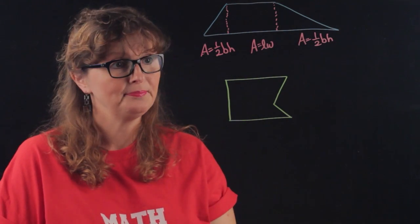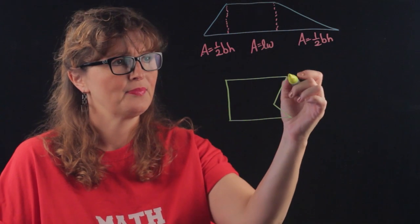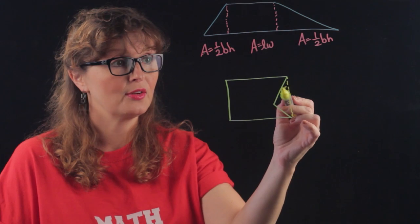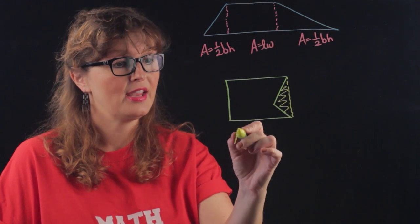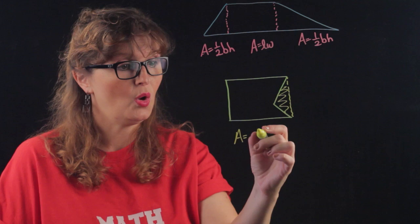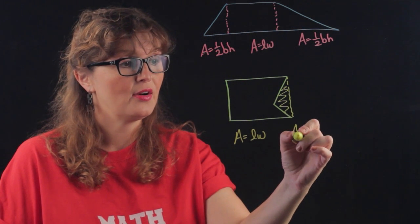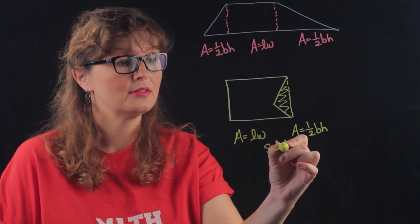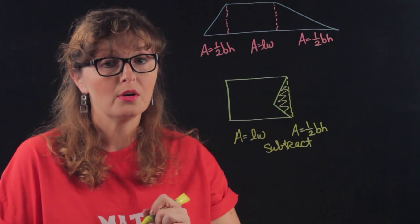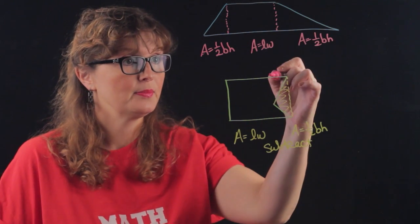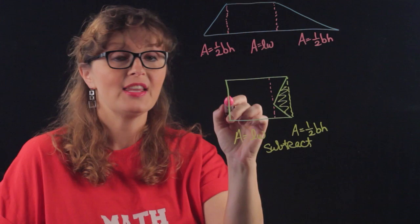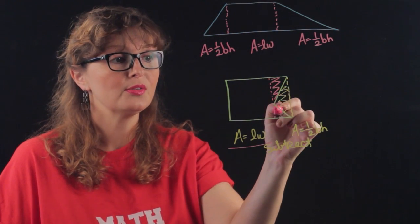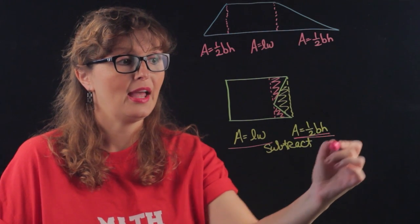For this crazy guy, we can do this one of two ways. We can either consider the extra triangle here, and then we have the area of the whole rectangle and then the area of the triangle and then subtract. Or we can look at the area of the rectangle, which is this one, and then two triangles, and then add.